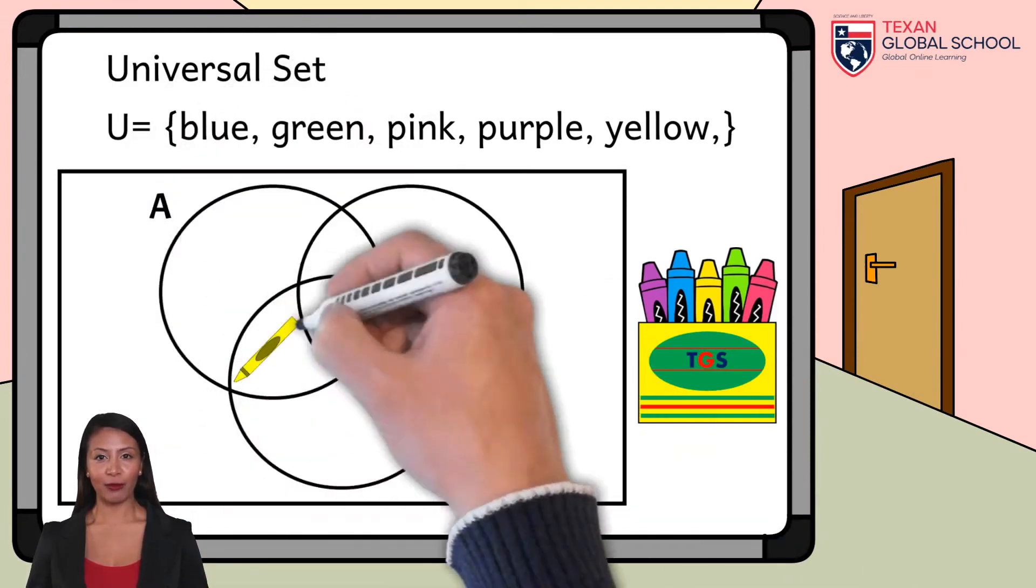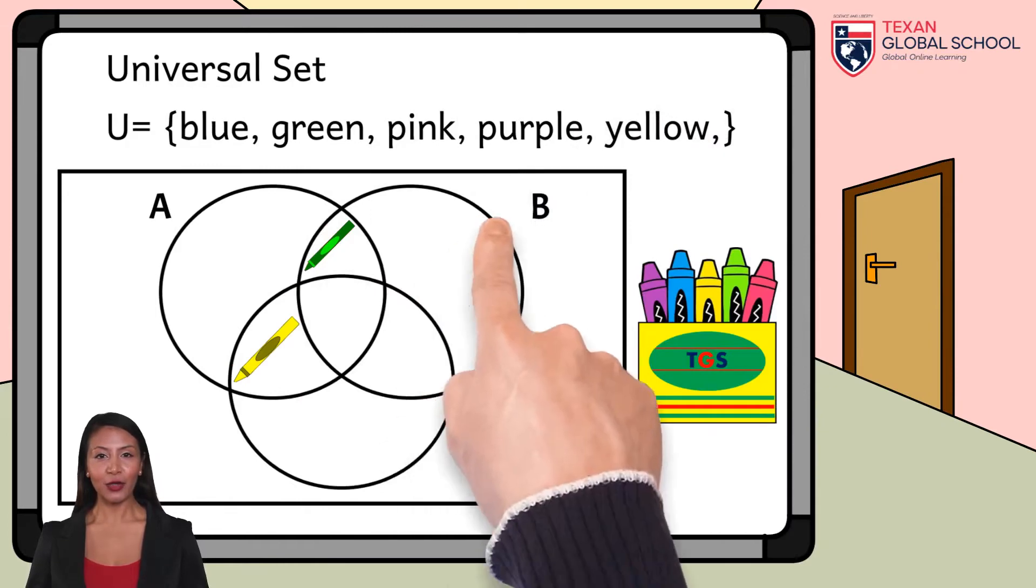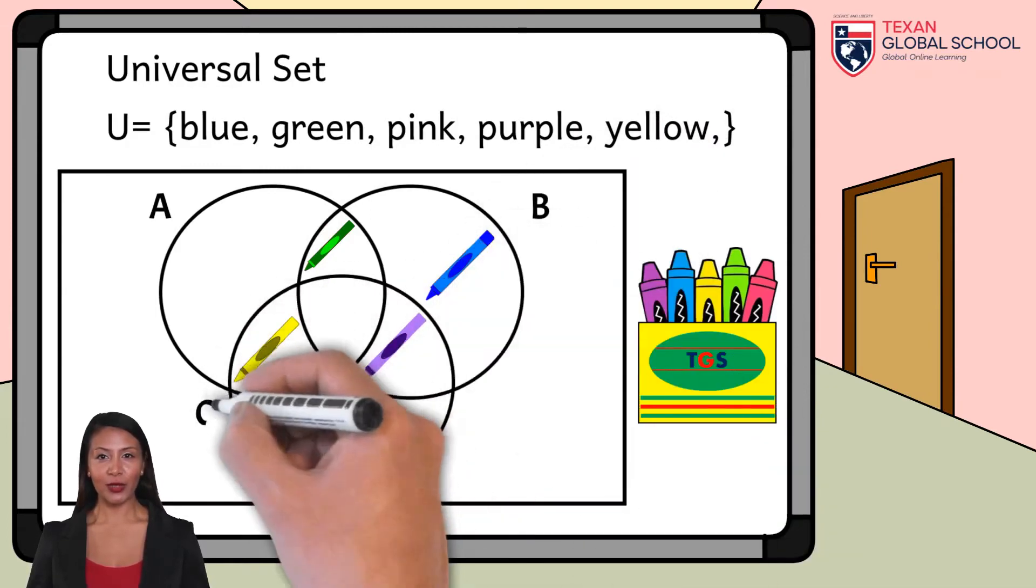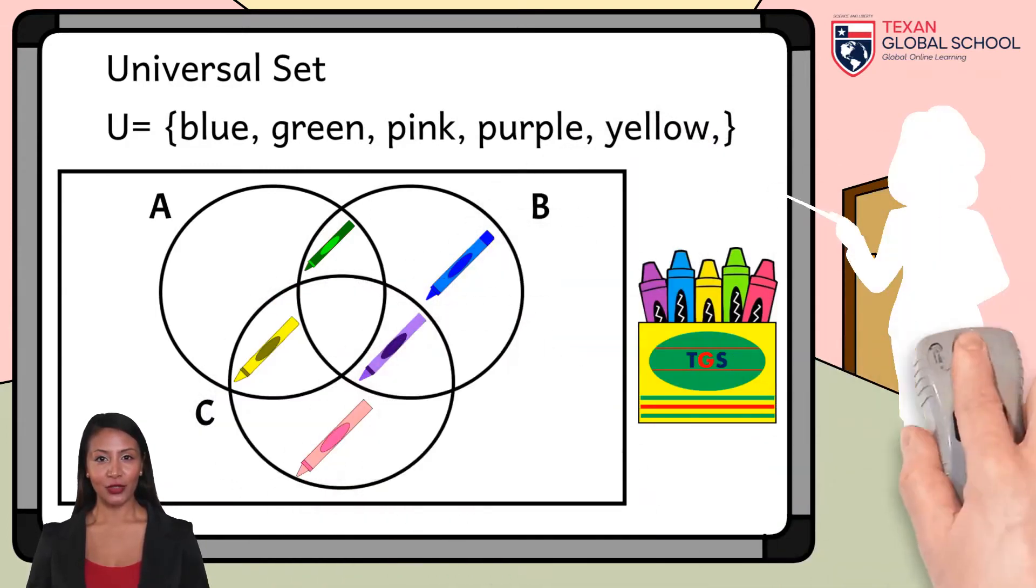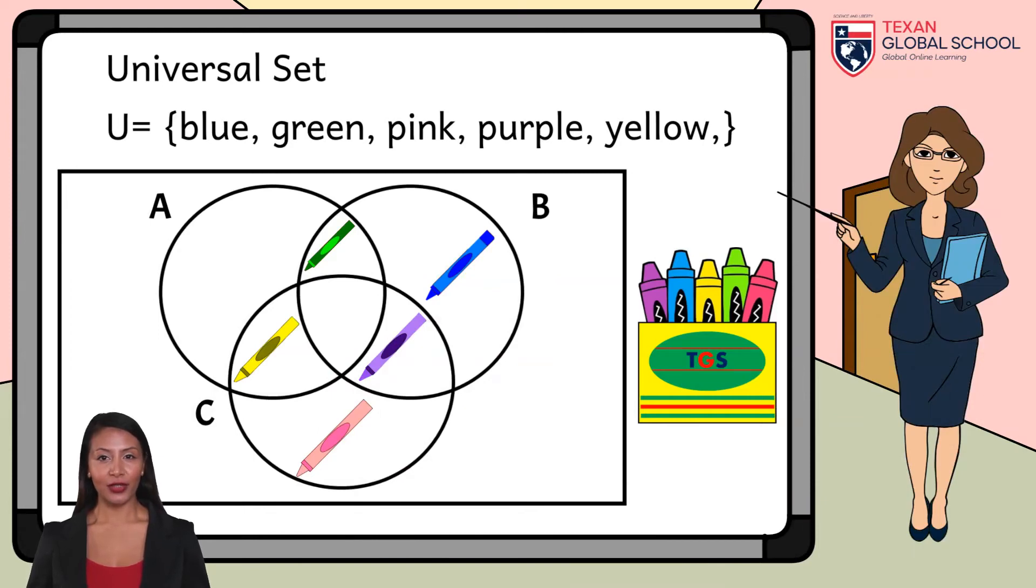Likewise, in the Venn-Euler diagram, we place the sets A, B, and C according to the relationships that exist between them. The common elements are placed at the intersections, outside of them the particular elements of each set.